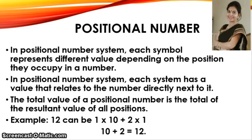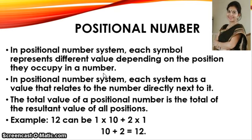In positional number systems, there are only a few symbols, which are called digits. These symbols represent different values depending on the position they occupy in the number. A computer can understand positional number systems. Whenever we type a letter or word, the computer translates it into a number, because a computer can understand only numbers. The value of each digit in a number is determined by three things: the digit itself, the position of the digit, and the base of the number system.